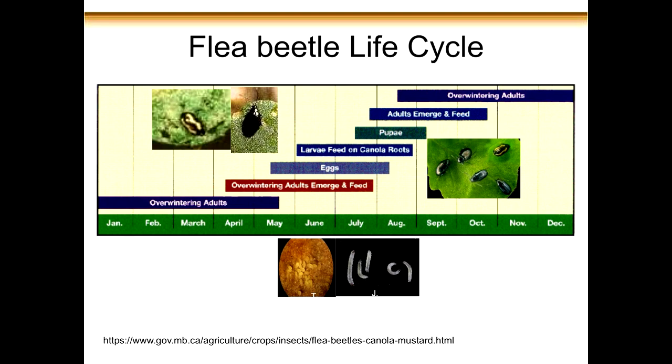The life cycle of the flea beetle goes like this. Right now, if you want to find a flea beetle, you will have to dig them out of the leaf litter in tree shelters — that's where they like to overwinter — or in road margins, grassy areas, wherever there is a lot of leaf litter. Then, depending on the species: if you were a hop flea beetle, you wake up a little bit earlier; if you're a striped flea beetle, about a week later; and the laziest one is the crucifer flea beetle, which wakes up quite late.